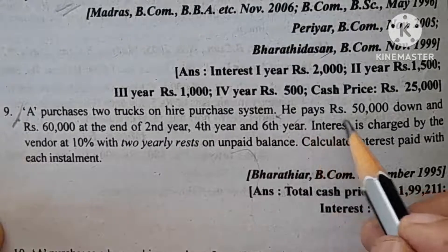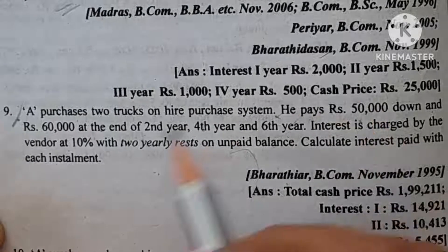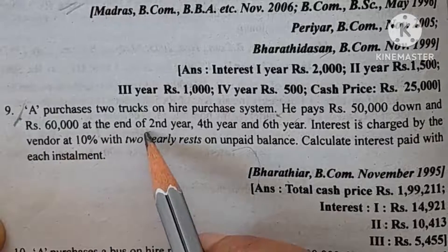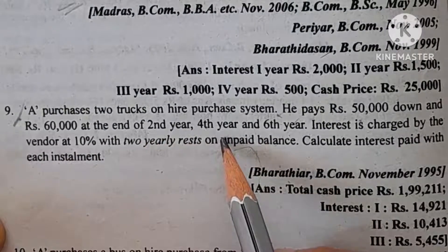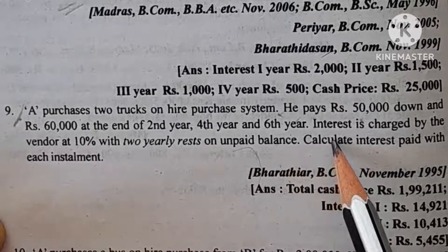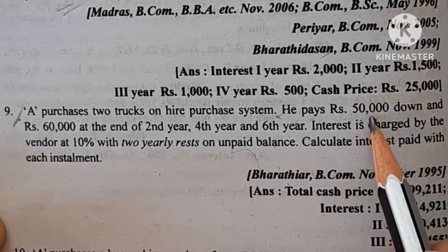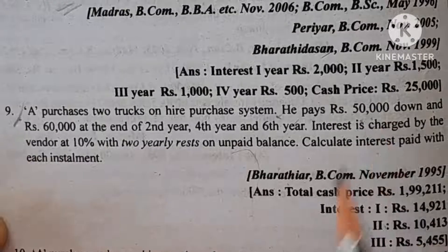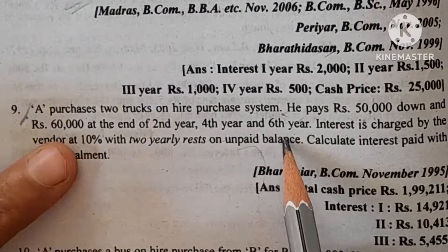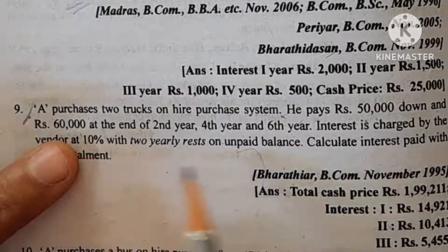He pays rupees 50,000 as down payment. Then he pays 60,000 at the end of the second year, fourth year, and sixth year. So the yearly installment amount is 60,000 — three installments of 60,000 each.